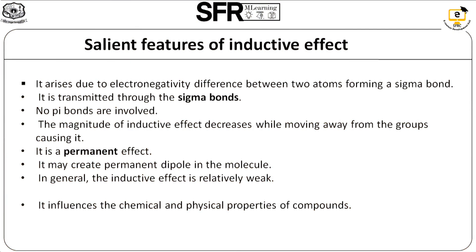The salient features of inductive effect: it arises due to the electronegativity difference between two atoms forming a sigma bond. It is transmitted through the sigma bond only, with no involvement of pi bond. The magnitude of inductive effect decreases while moving away from the group. It is a permanent effect and creates a dipole moment in the molecule. Inductive effect is relatively weaker than hyperconjugation, mesomeric effect, and resonance effect.